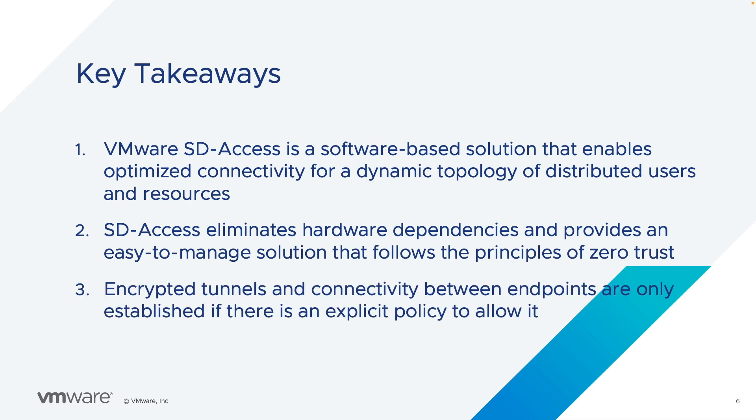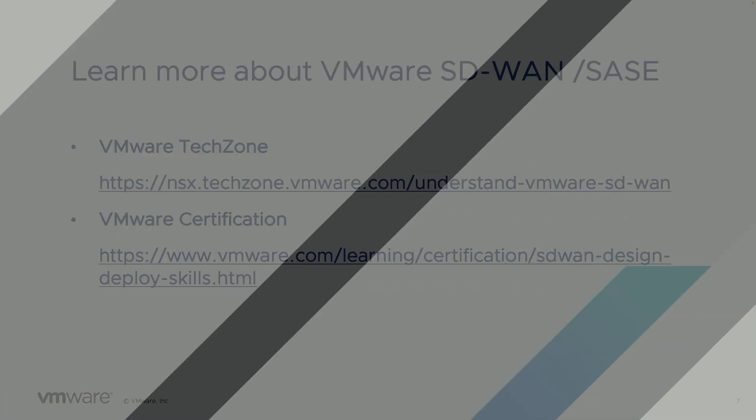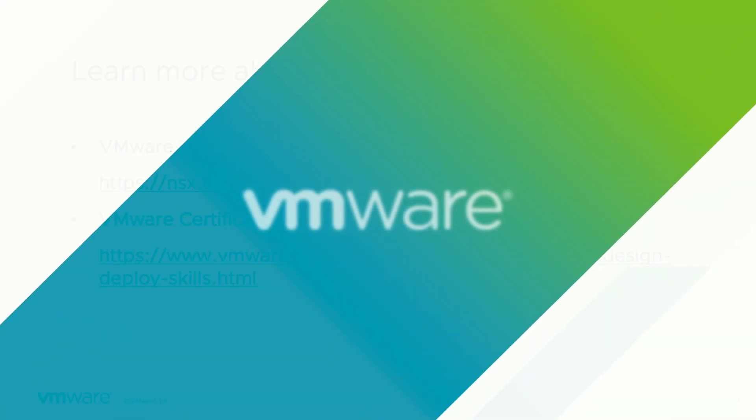Lastly, secure connectivity between endpoints is only established if an explicit policy allows the communication to occur; otherwise the connection is denied. Thank you for watching this video. We'll see you in the next one.